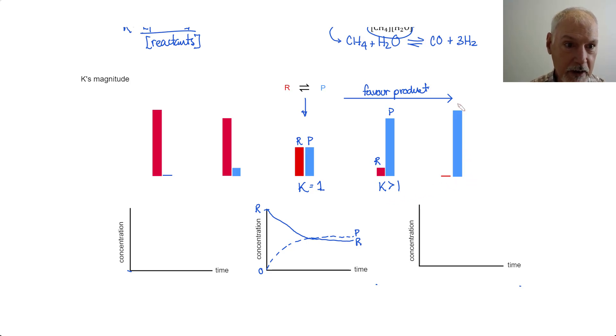And in this final scenario, I have almost no reactant left. We would say that this reaction has almost gone to completion. We've completely converted reactant to product. And in this situation, K would be much, much greater than one.